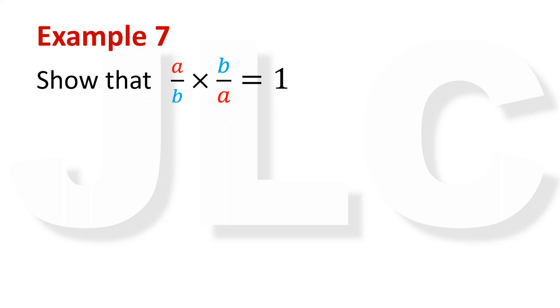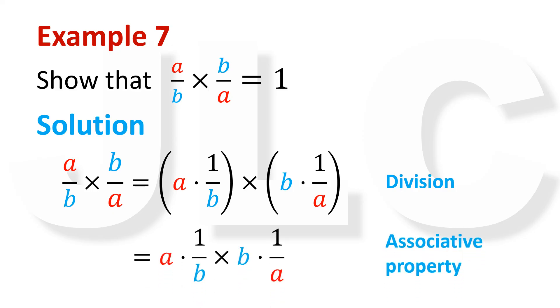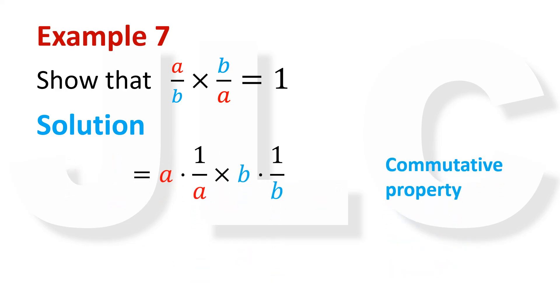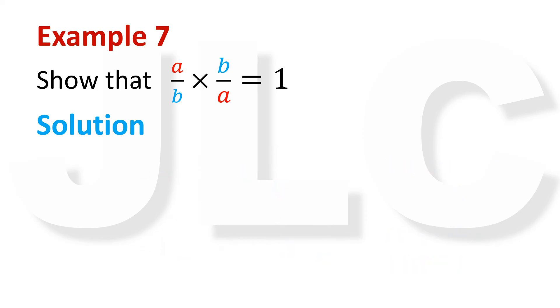Example 7: Show that A over B times B over A equals 1. We can rewrite the equation as the product of A and 1 over B times the product of B and 1 over A. By commutative property, we can write A times 1 over A times B times 1 over B. By associativity, we write the product of A and 1 over A times the product of B and 1 over B. The terms inside reduce to 1 by the inverse property, which finally evaluates to 1.